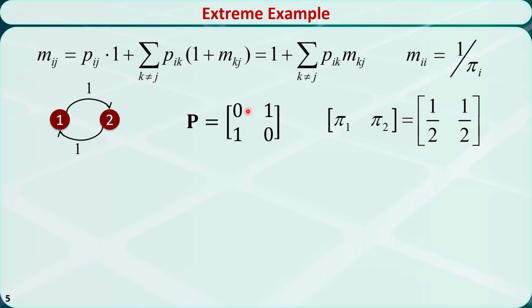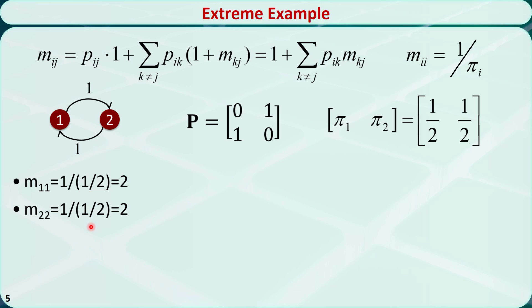Let's push it further and look at this extreme case. This is no longer an ergodic Markov chain because each state is periodic with a period of 2, but these formulas still work. This is the corresponding transition matrix, and the steady state probabilities are 1/2 for both state 1 and state 2. m11 is equal to 1 over π1, which is equal to 2, meaning if we are currently in state 1, it will take on average 2 transitions to first come back to state 1. Similarly, m22 is equal to 2, meaning if we are currently in state 2, it will take on average 2 transitions to come back to state 2.